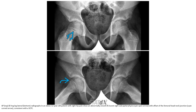AP (top) and frog-leg lateral (bottom) radiographs of a 12-year-old patient with right hip pain show an abnormal, smooth, and widened right subcapital physis with offset of the femoral head-neck junction, consistent with slip capital femoral epiphysis.